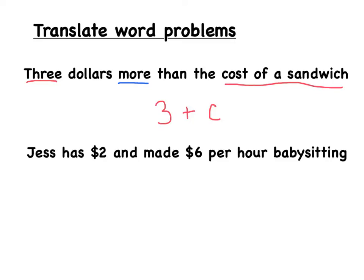In the second example, Jess has two dollars and made six dollars per hour babysitting. In this example, it looks like there might be some multiple operations that we would be using. At the beginning, Jess already has two dollars in her pocket. So, we know that Jess already has the two dollars. And it looks like she is going to be adding however much money she's going to make when it comes to babysitting.